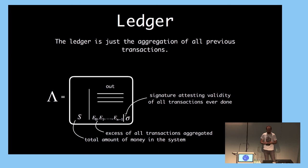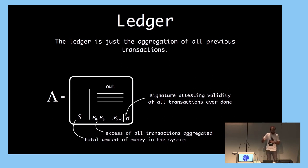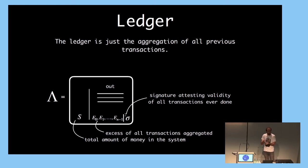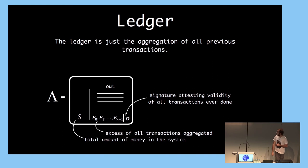In MimbleWimble, everything is a transaction. Even the ledger can be thought of as a list of coins that were generated at some point and then squashed together — it has only outputs, the supply accounts for the total money available in the system, and the signature accounts for all past transactions. So instead of downloading 200 gigabytes, if I want a cryptographic notion of validity of the UTXO set, I just download this, verify the signature and all the range proofs, and I'm done.